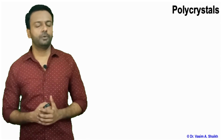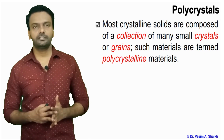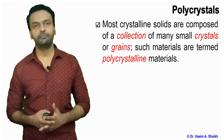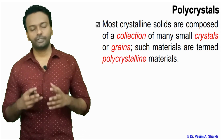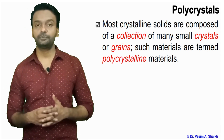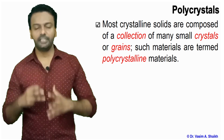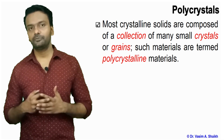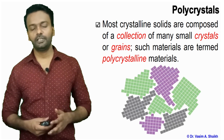Now let us talk about polycrystals or polycrystalline material. The main difference between single crystal and polycrystals is that polycrystals have many grains and many grain boundaries. Most crystalline materials solidify and form polycrystals, as formation of single crystal is much more difficult and requires a controlled environment. Most crystalline solids are composed of a collection of many small crystals or grains, and such materials are termed polycrystalline material.